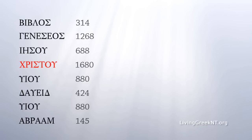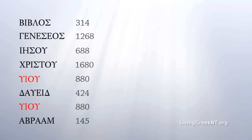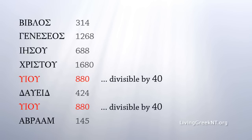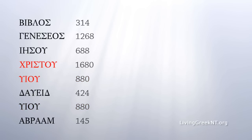Christu — Christ — has a value of 1680, a number divisible by 40. Viu — the son — mentioned twice, is 880, also divisible by 40. The two middle words in the verse, Christu and Viu — Christ and the son — add up to 2560, which is 40 times 8 times 8. Back to the number of words in the New Testament: 40 must be here by intent.